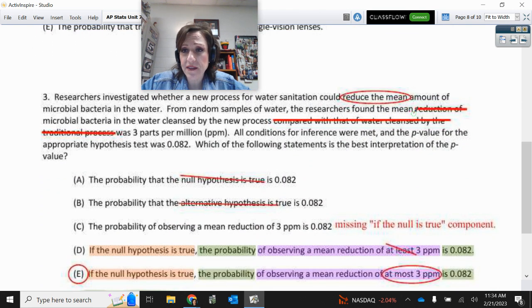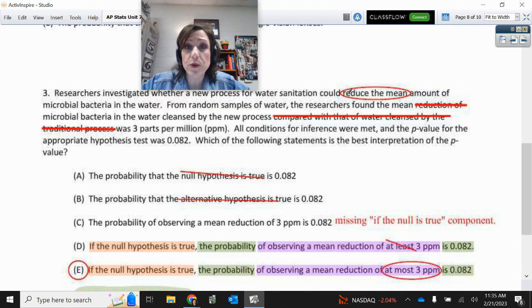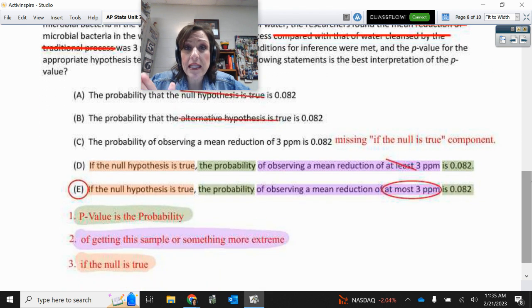On this one, make sure you know they were wanting to see if it reduced the mean amount of bacteria. There were three parts per million. The researchers found an average of three parts per million. So that's the sample results they received. So p-value of 0.082. P-value is the probability, so there's an 8.2% chance of getting these sample results of three parts per million or more extreme. Well, they are wanting to reduce the average. So that means they want three or less. That is not 'at least', this is 'at most' three parts per million.